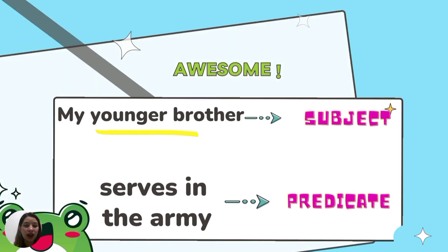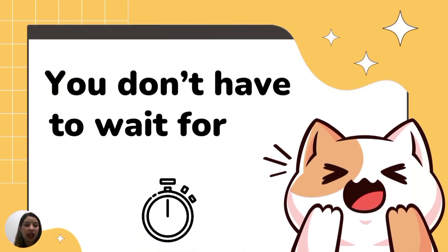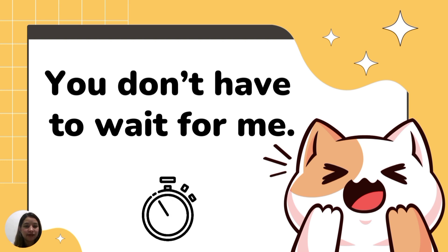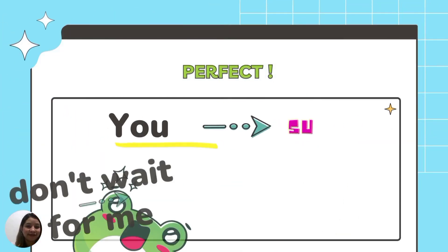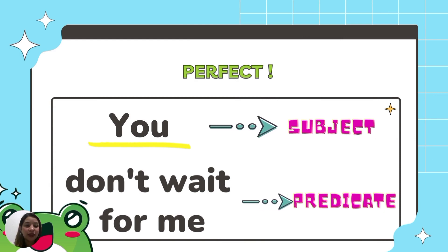Let's try another one. You don't have to wait for me. What is the subject and the predicate in this sentence? Perfect! You is the subject. Don't wait for me is the predicate.